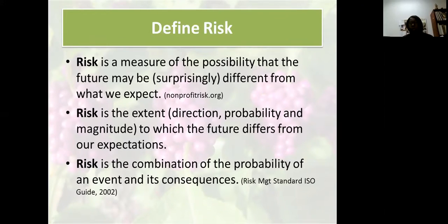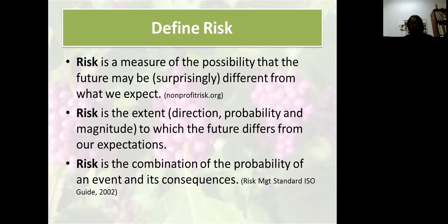When you try to define risk, there are lots of different definitions. A risk is a measure of the possibility that the future may be surprisingly different from what we expect. Risk is also the extent — the direction, which can be positive or negative — the probability, the likelihood of it occurring, and the magnitude, the severity to which the future differs from our expectations. And risk is a combination of the probability of an event and its consequences.